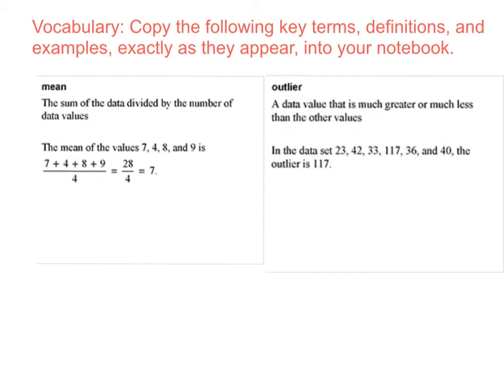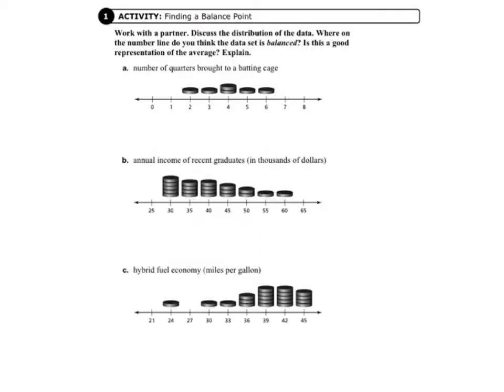An outlier is a data value that is much greater or much less than the other values. Today we'll be starting on page 203 in your record and practice journal.